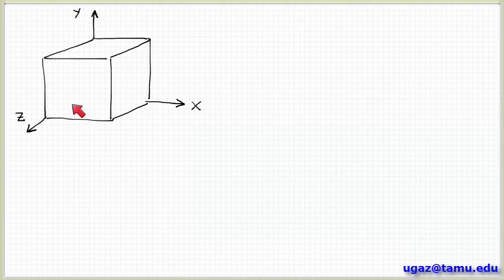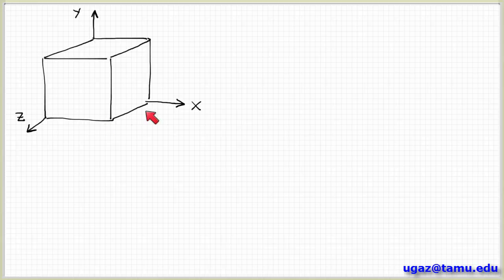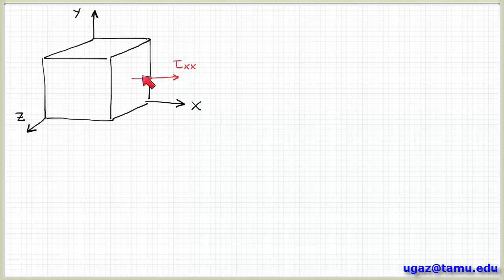Let me draw a cube here to show some things about how we talk about these stresses. This is a simple shape that has surfaces oriented in each of these directions relative to a Cartesian coordinate system x, y, and z. I can write on this face tau xx — this is the stress on a surface whose normal is in the x direction due to a force in the x direction. So this is a normal stress, similar to what we think of as pressure.